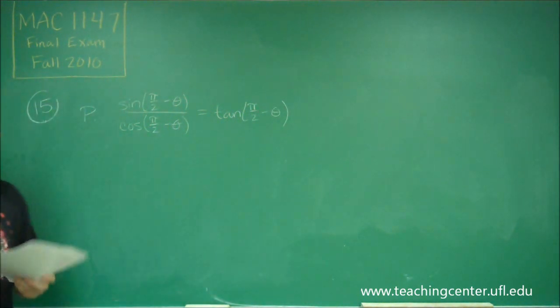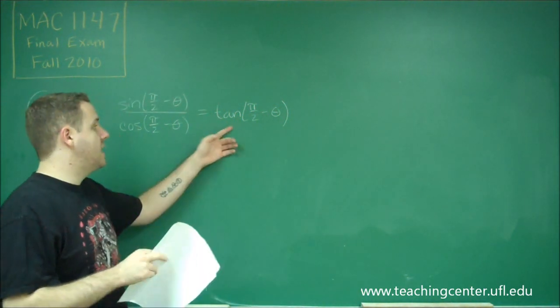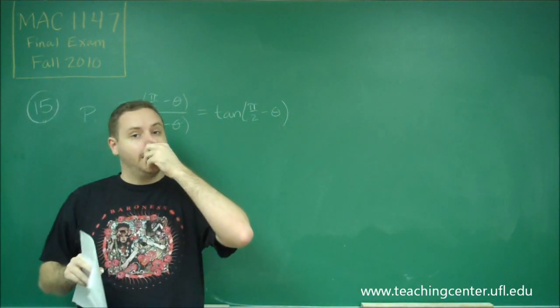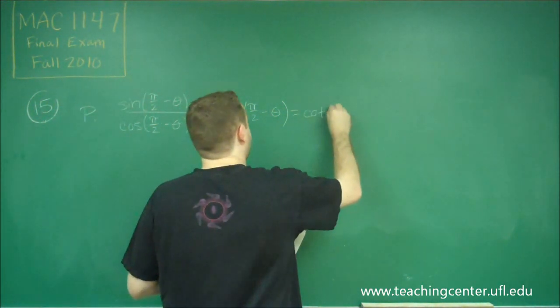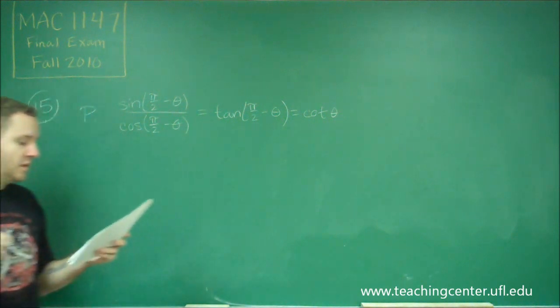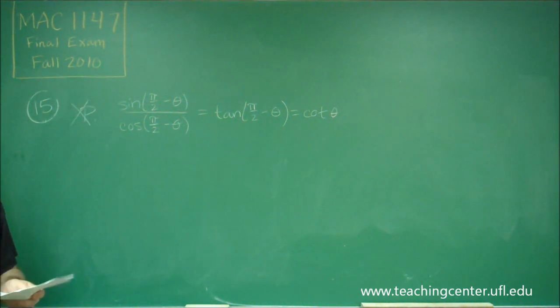Tangent of pi over 2 minus theta is not the same thing as tangent of theta. This is tangent of the complementary angle to theta, which is in other words cotangent of theta. So P is not equal to tan theta.